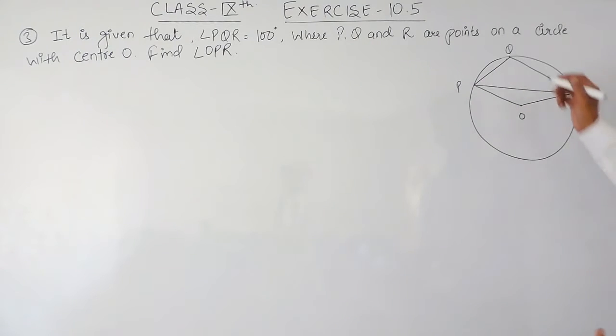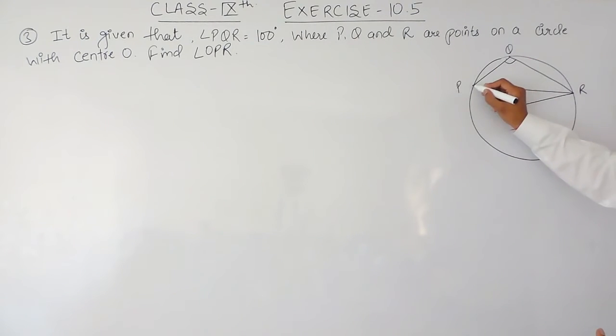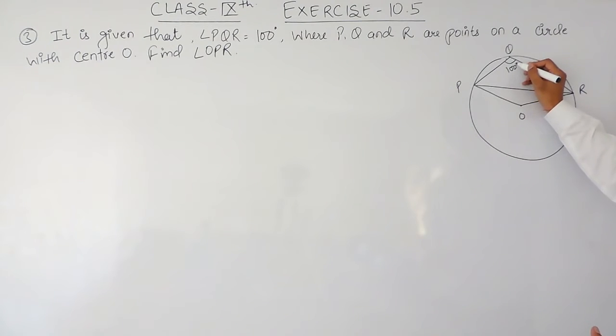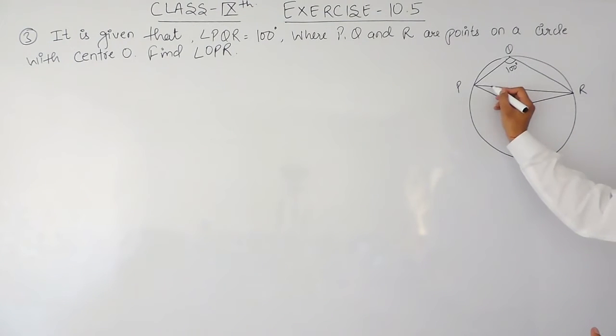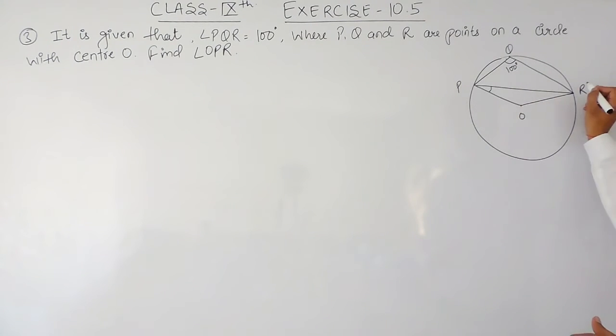Here, you are given that the value of angle PQR is equal to 100 degrees, and you have to find the value of angle OPR.